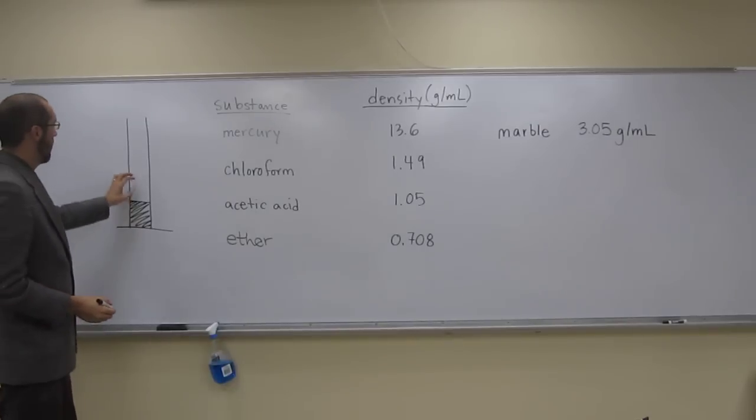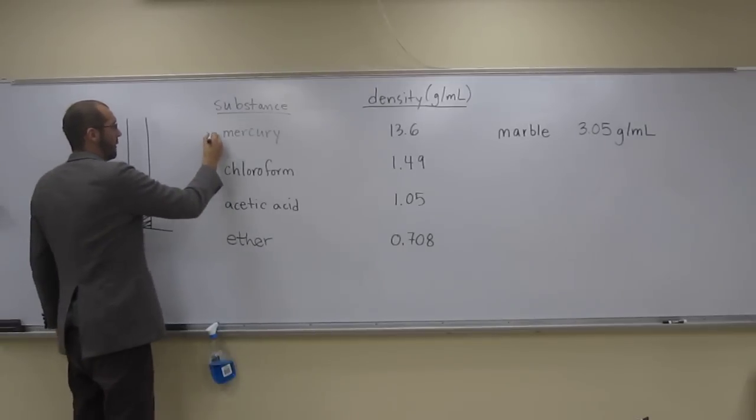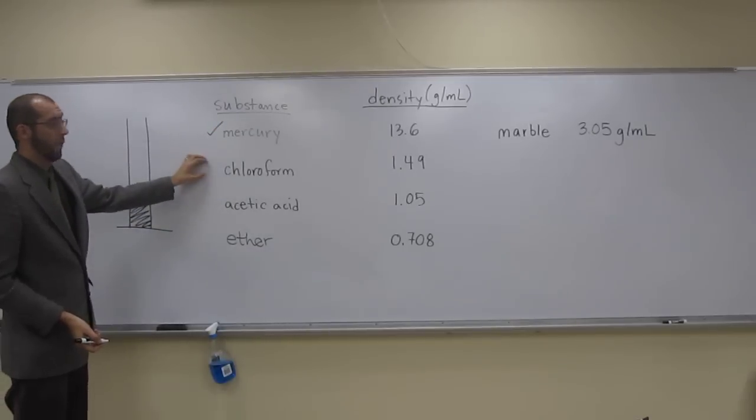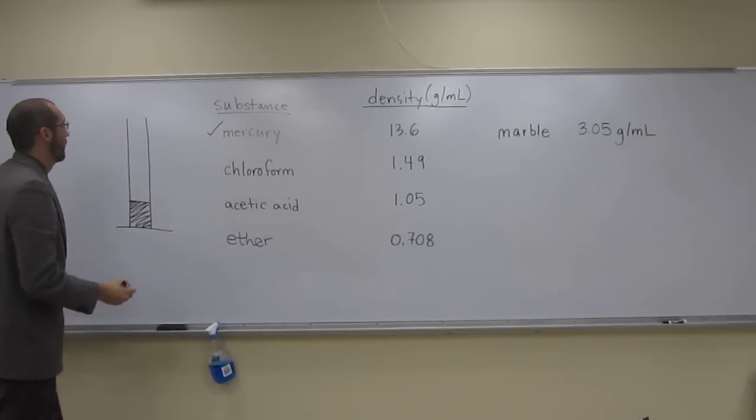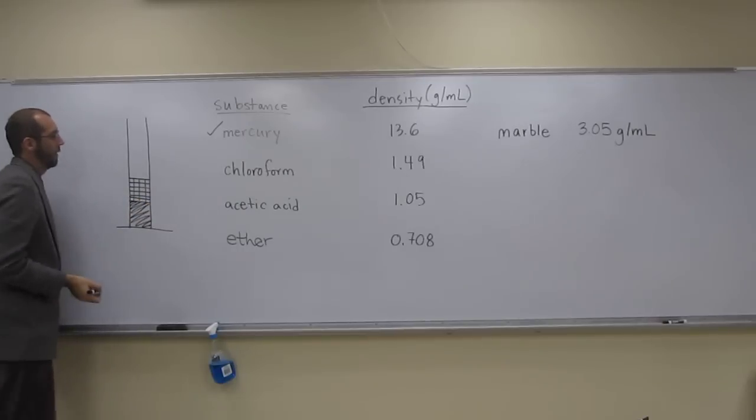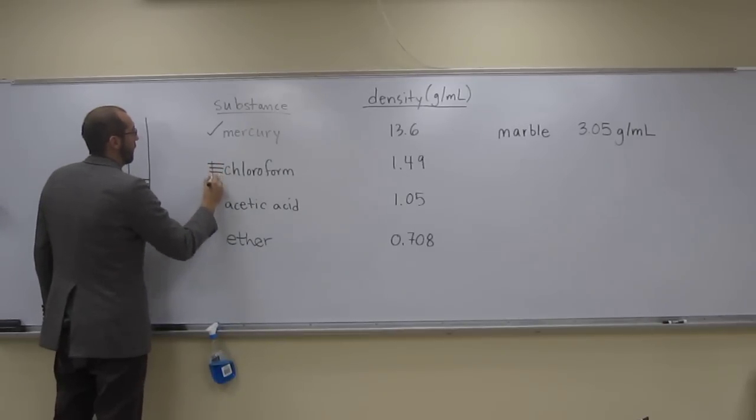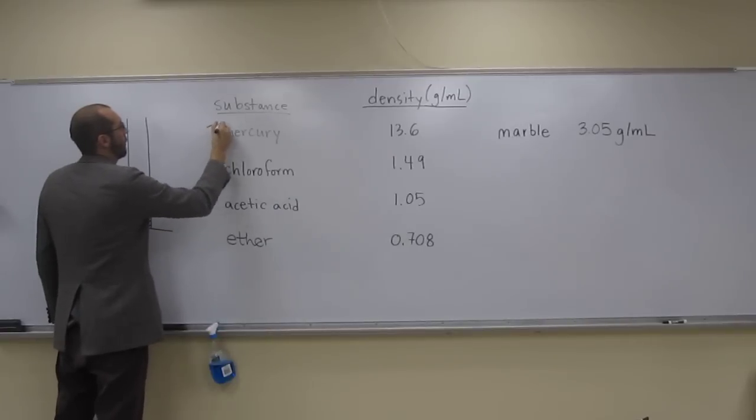Then what's going to be on top of the mercury? We're looking at these four substances here. Next is going to be chloroform, right? So we'll put that, and chloroform is the checkered one there.